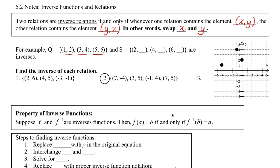If we swap those, then this (1, 2) is going to be (2, 1). And then (3, 4) is going to be (4, 3). And then (5, 6) is going to be (6, 5). So we would say S and Q are inverses because every element in Q, (x, y), is the opposite or the inverse of all the elements in S.